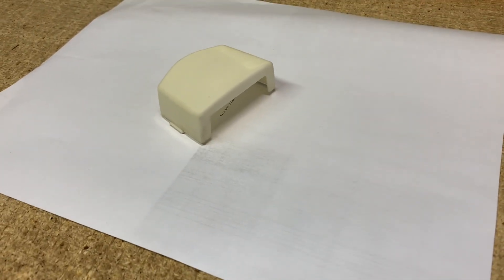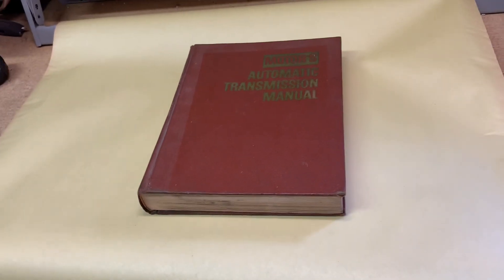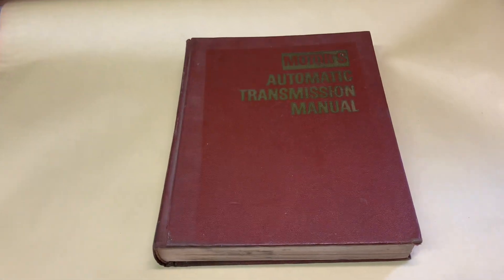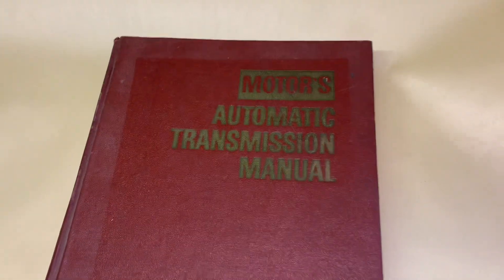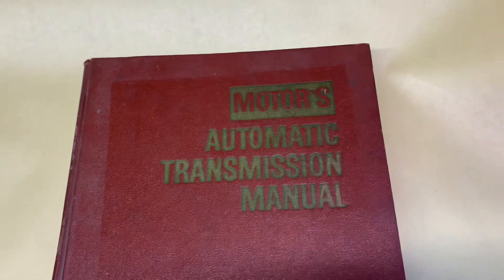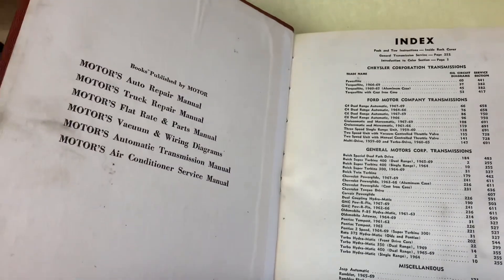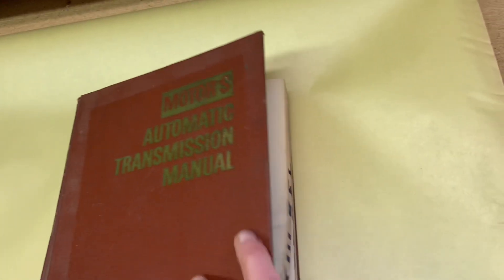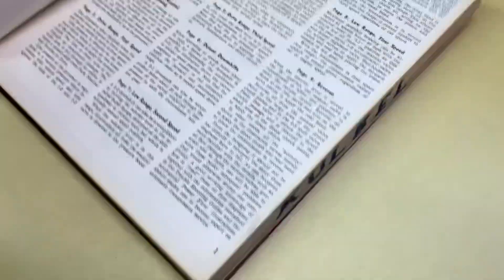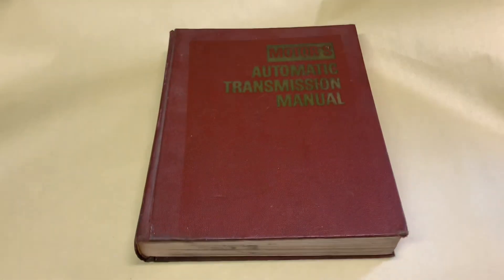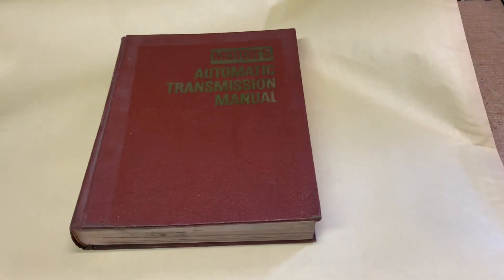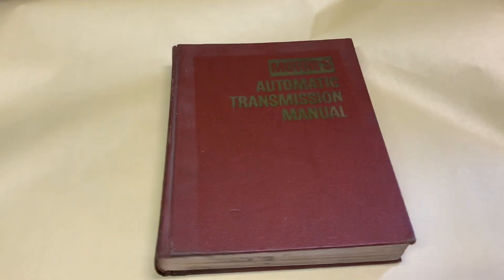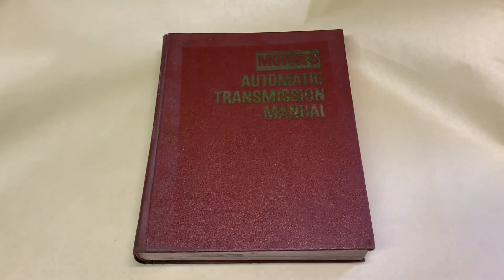This dome cover sold for $20. This is another one of those Motors brand repair manuals, this one covering automatic transmissions for American vehicles. Obviously a well-used copy, but it's one of the more expensive ones out of that lot of repair manuals I bought over last summer. This one sold for $35.